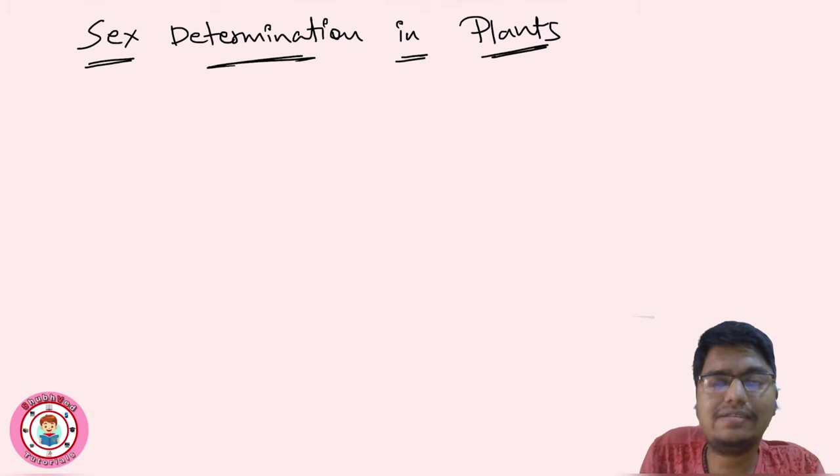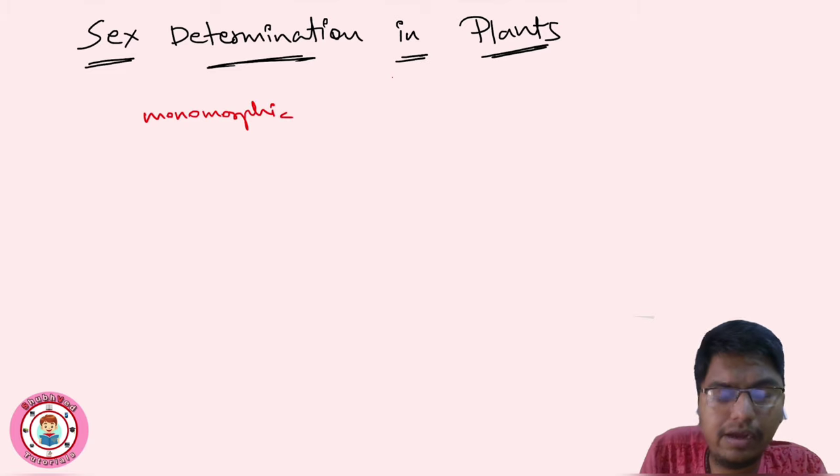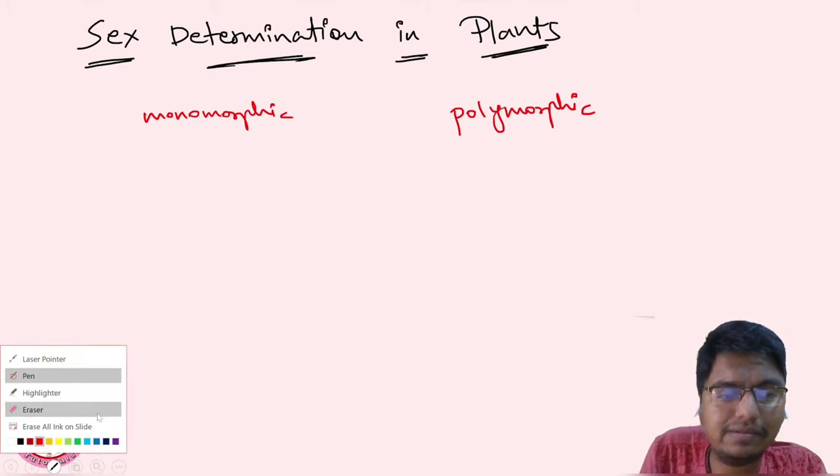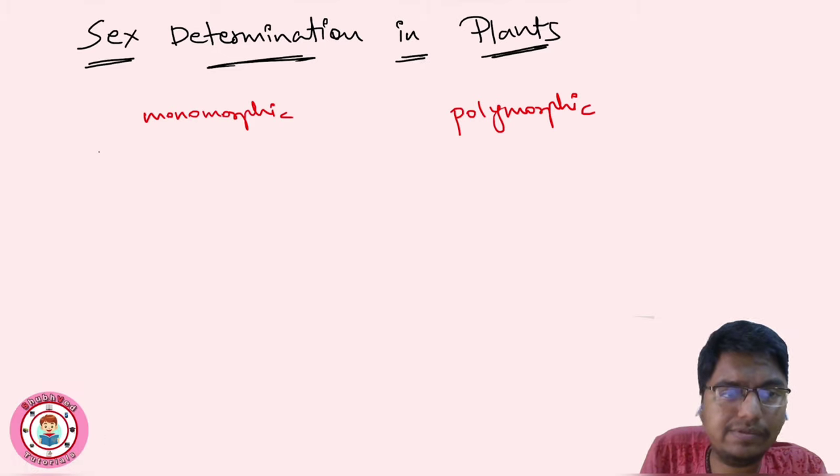Let's get started. Basically in plants, sexually reproducing plants, there is monomorphic and polymorphic. Monomorphic means single plant and poly means different plants. Here also there are types.